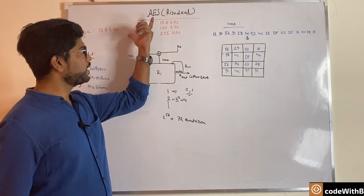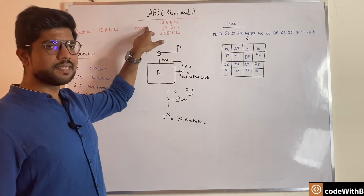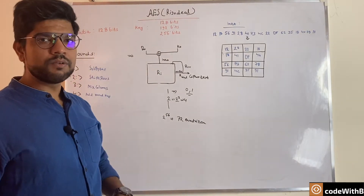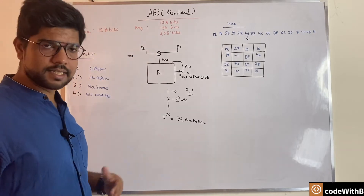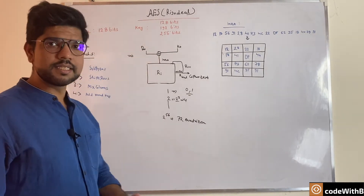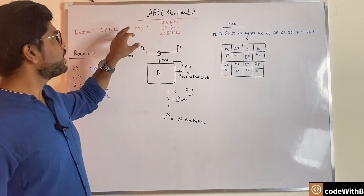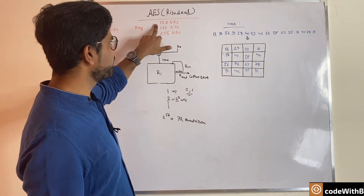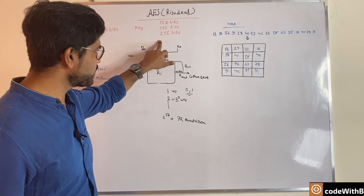Then came the AES algorithm with different key sizes. Until now there is no known attack, so AES is still considered the safest algorithm for symmetric key encryption. There are three possible key sizes: 128 bits, 192 bits, and 256 bits.